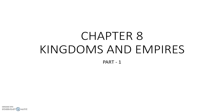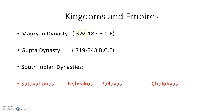In this chapter, we are going to learn about kingdoms and empires, and some important dynasties which ruled our country. These include the Mauryan Dynasty (322 to 187 BCE), Gupta Dynasty (319 to 543 CE), and South Indian dynasties such as Satavahana, Ikshvakus, Pallavas, and Chalukyas.